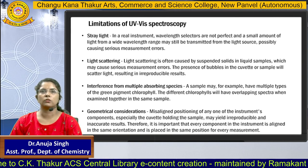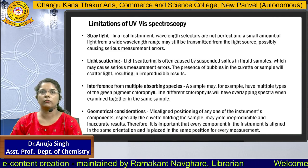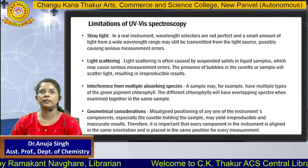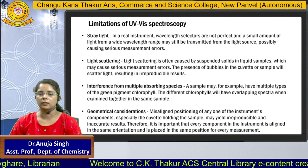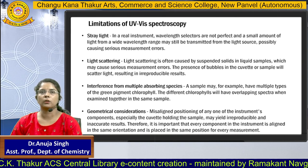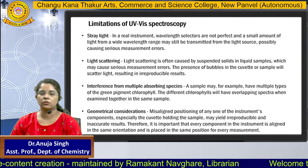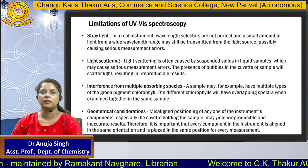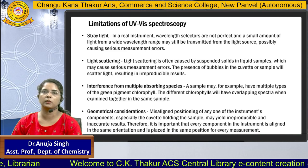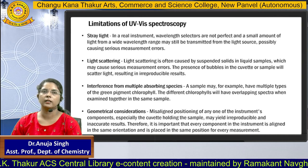This spectrum also has some limitations. First is stray light — any unwanted light entering the instrument can affect the result. Second is light scattering, often caused by suspended solids in a liquid sample, which may cause serious measurement errors. Third is interference from multiple absorbing species — if multiple species are present in the sample, their absorptions can overlap. Fourth is geometrical errors — if mirrors are not properly fixed or the cuvette sample container is not correctly placed, it may result in inaccurate data.